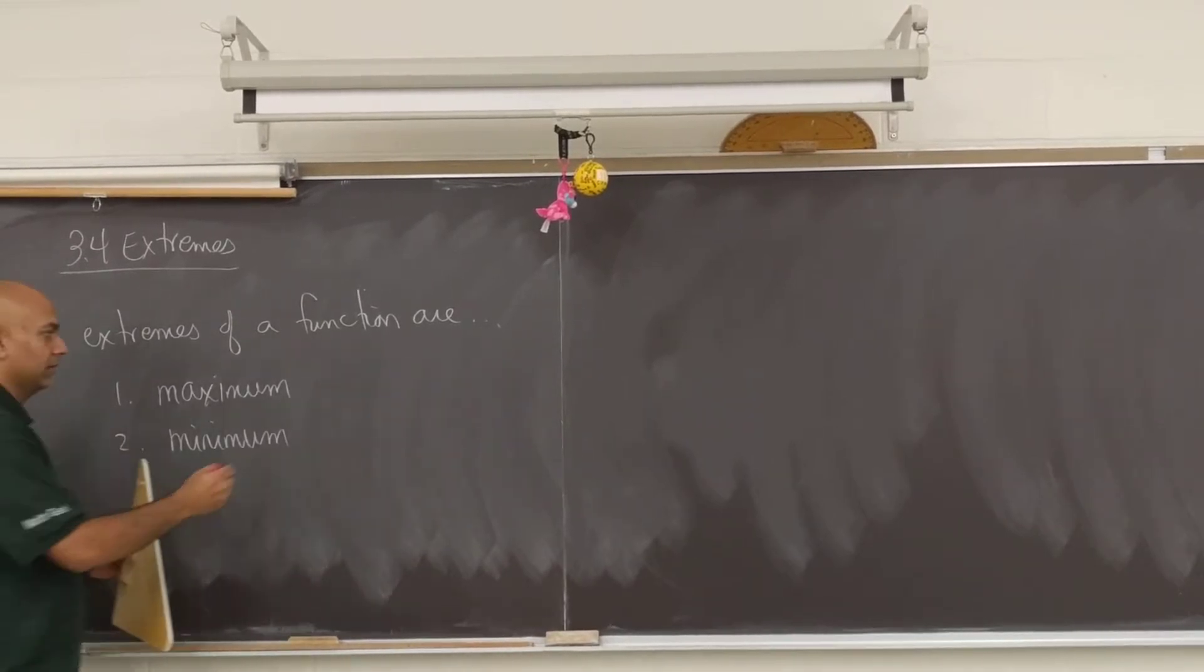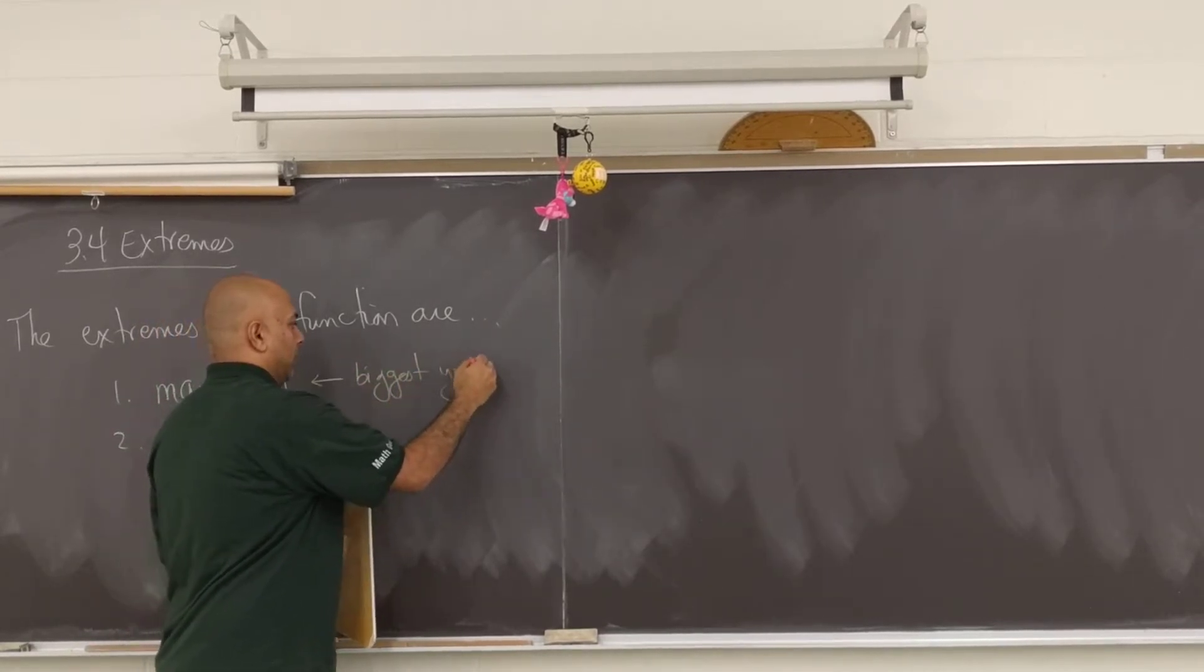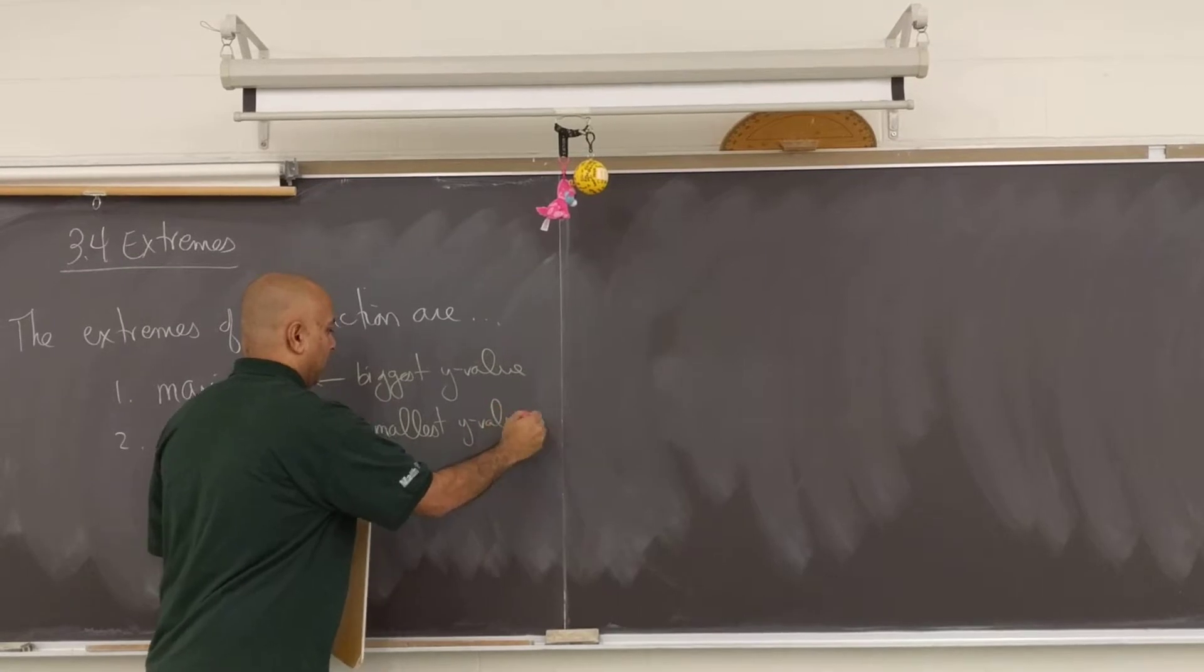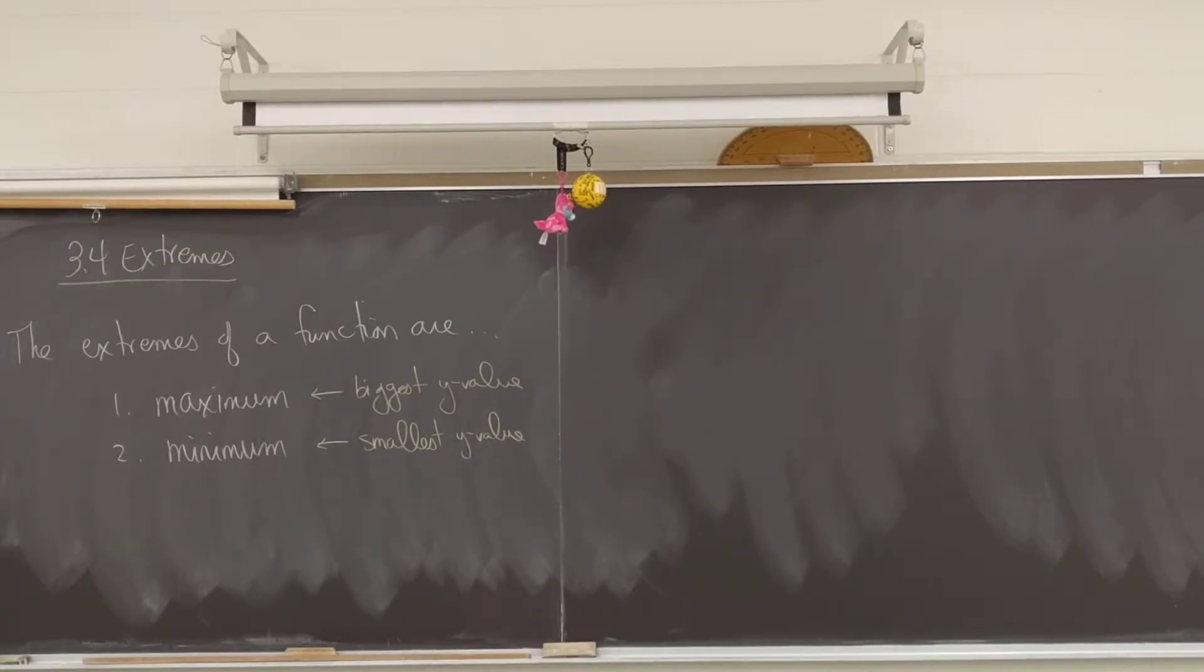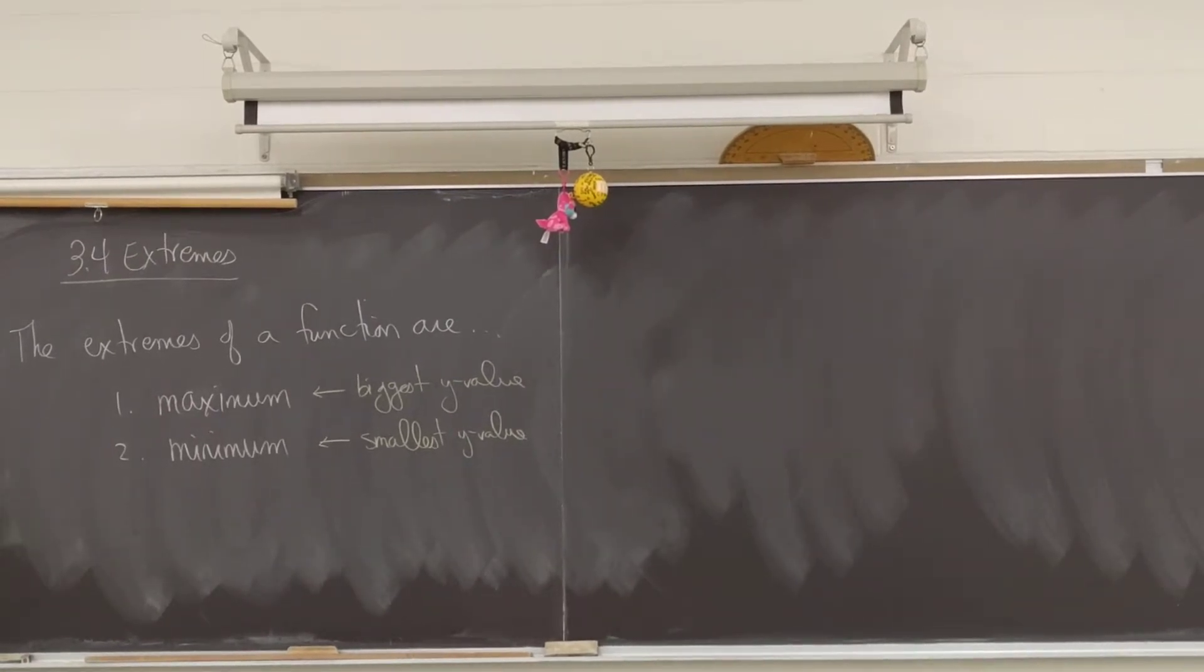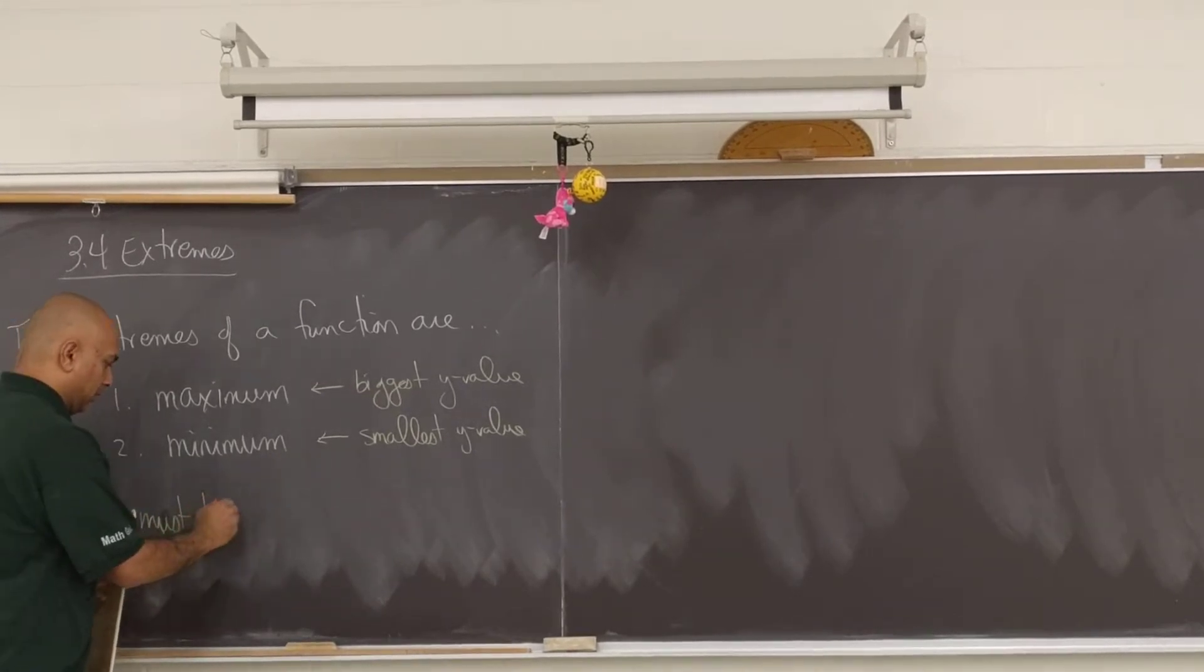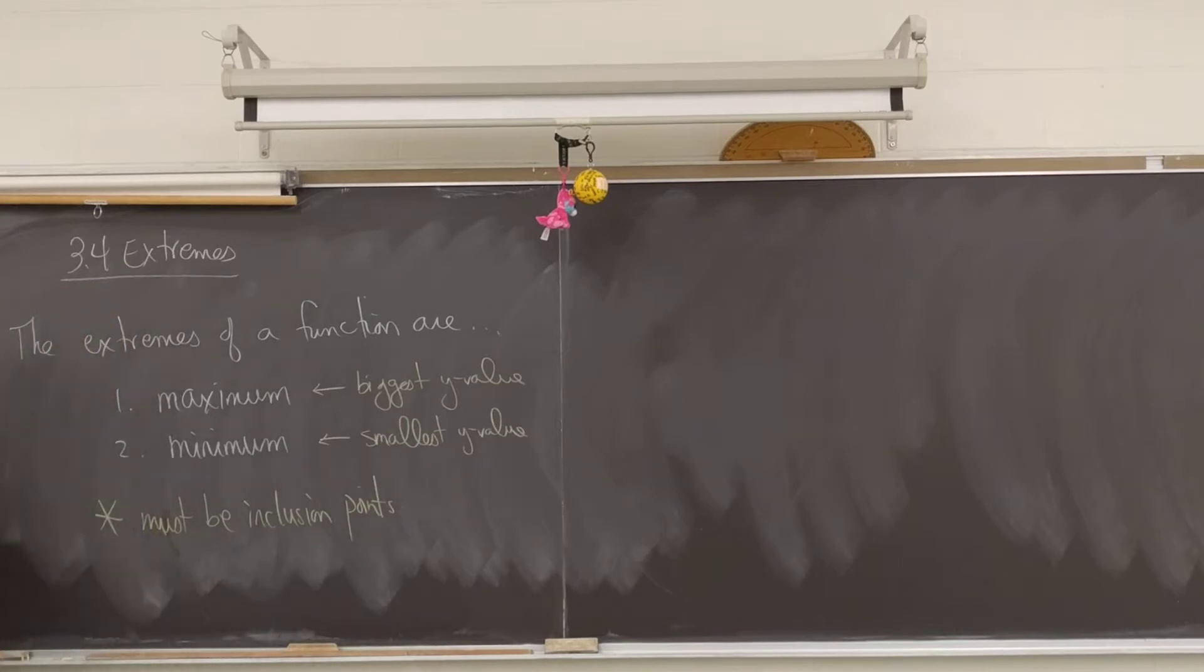Right beside that, I'll just write down easy so I don't think about what this is. Maximum is the biggest y value. Minimum is the smallest y value. The word value just means number, so you're looking for the biggest and smallest y and the numbers for the y's. Which is related to range, but it's not exactly the same thing. So I'm going to put a little note here saying must be inclusion points. Which means if it's an arrow, that's not an inclusion point. Or if it's an exclusion point, it's not an inclusion point. So that will change how we write our answer.